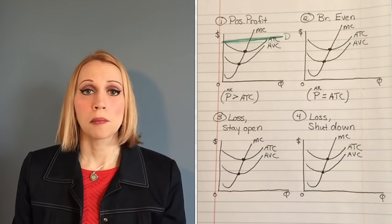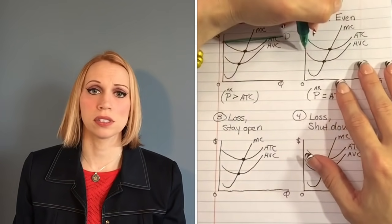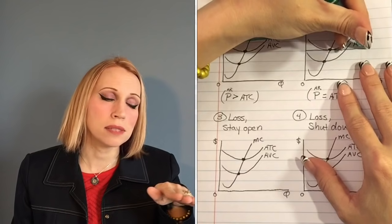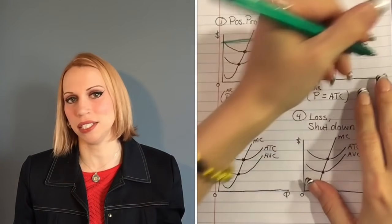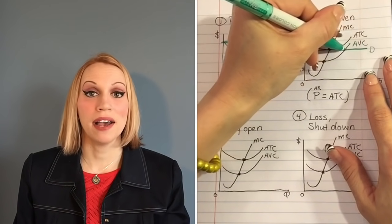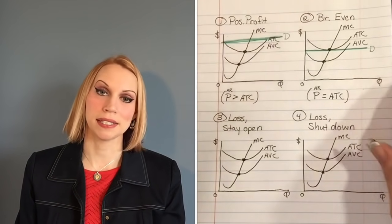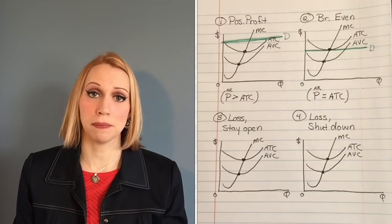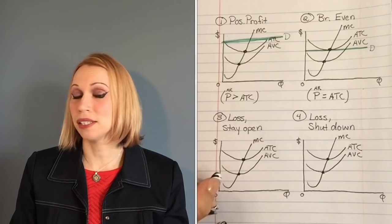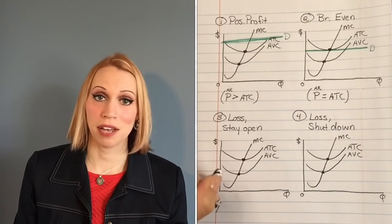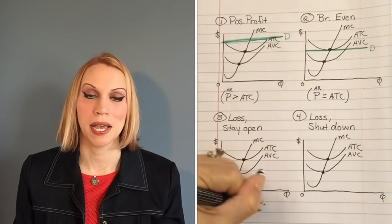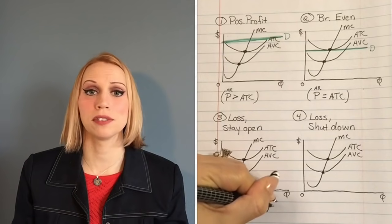Breaking even means you're just covering your cost, so we're going to take that demand curve and have it just skim — just brush right up against the bottom of the ATC curve. At our best possible output level, our AR is right there meeting our ATC. Now if you're making a loss, we lower that demand curve even more. If your demand curve is below your ATC and not even touching it, that means the money coming in is not enough to cover your total cost — your AR is not enough to cover your ATC. A loss is when your demand curve is below your ATC.